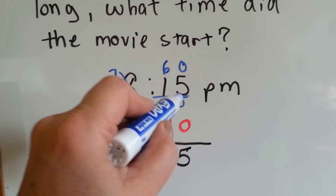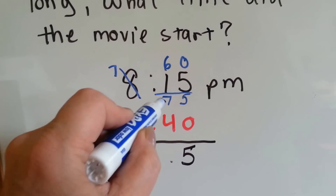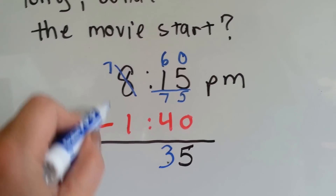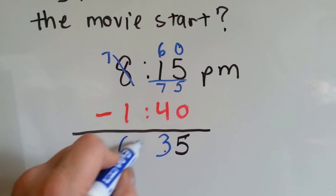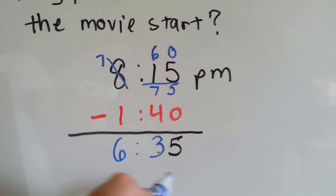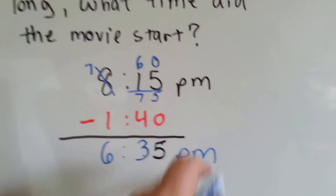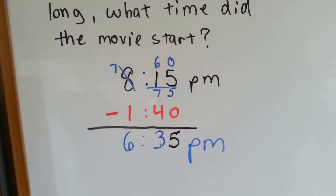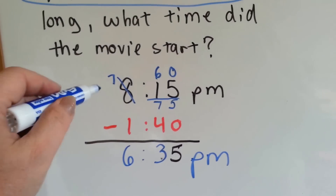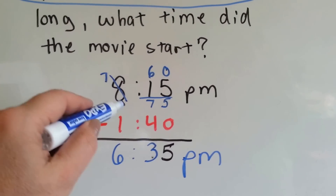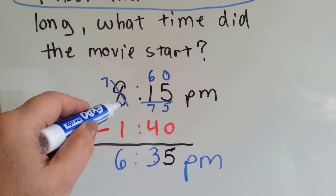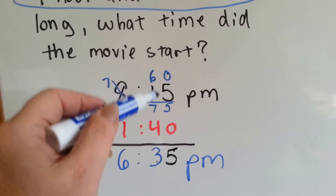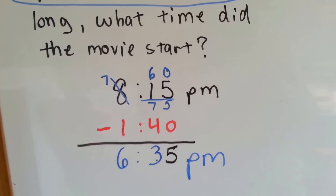5 take away 0 is 5, and 7 take away 4 is 3. 7 take away 1 is 6. Her movie started at 6:35 PM. Do you see how when I borrowed from the hours, 1 hour is 60 minutes? So I gave the minute side 60 minutes.